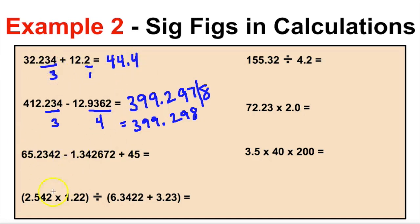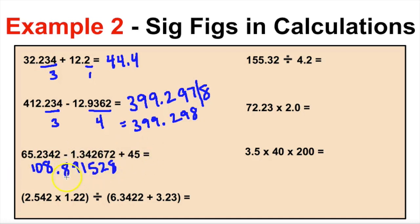For the next addition example, putting the values in the calculator gives 108.891528. One number has six decimal places and the other has none at all. So we must round to the nearest whole number. The eight rounds the one up to nine, giving a final answer of 109.